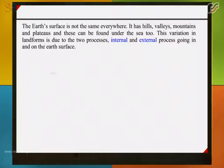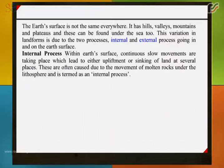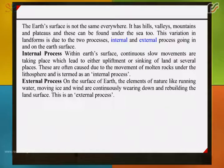This variation in landform is due to two processes: internal and external. Within earth's surface, continuous slow movements are taking place which lead to either upliftment or sinking of land at several places. These are often caused by the movement of molten rocks under the lithosphere and is termed as an internal process.